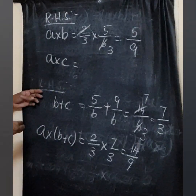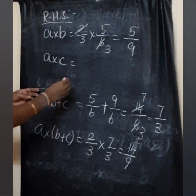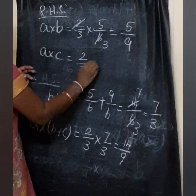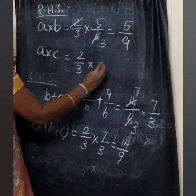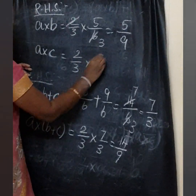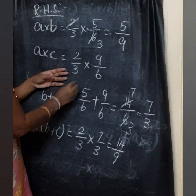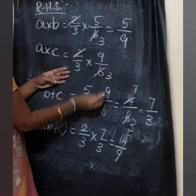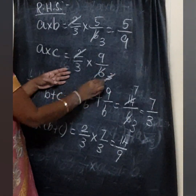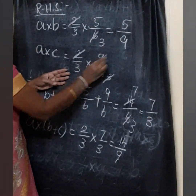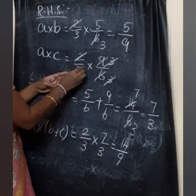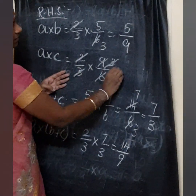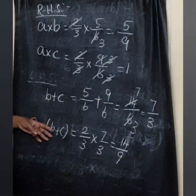A into C is 2 by 3 into 9 by 6. Simplifying: 2 and 6 cancel (factor of 2), 3 and 9 cancel (factor of 3), so 1 by 1 — the answer is 1.